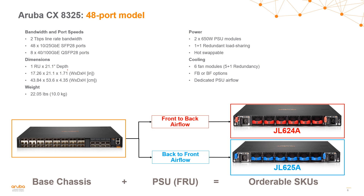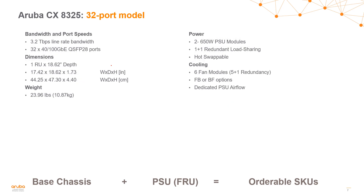Of course, it's standard dimensions — you can see the dimensions here, it's 19-inch rackable. Now the 32-port model is very similar — it's 32 ports of 40/100 gig, so we're doing a bit more bandwidth on this switch: 3.2 terabits of line rate bandwidth. Again, it's standard switching dimensions, 19-inch rackable switch.